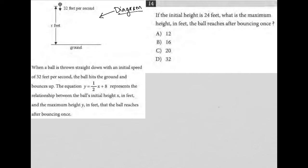So, it looks like we have some type of ball here that is being dropped from a height of X feet. We don't know the actual height, but we do know that it's falling at 32 feet per second, right? And we have the ground here. So, it seems pretty straightforward.